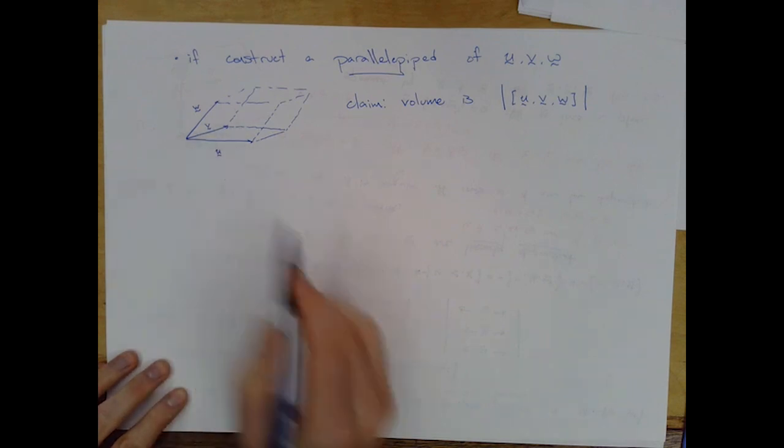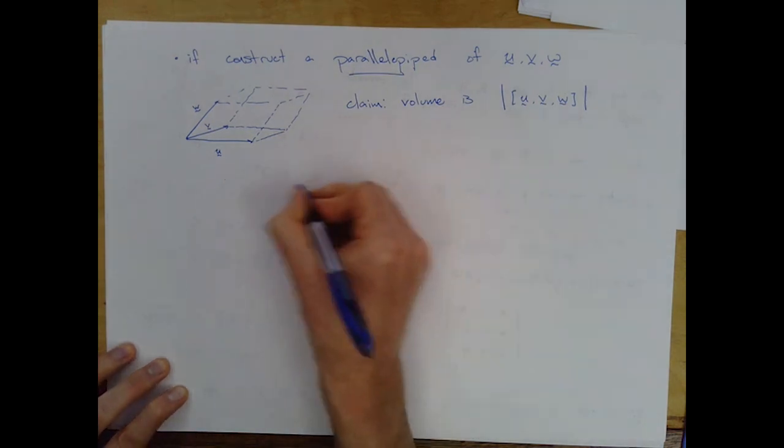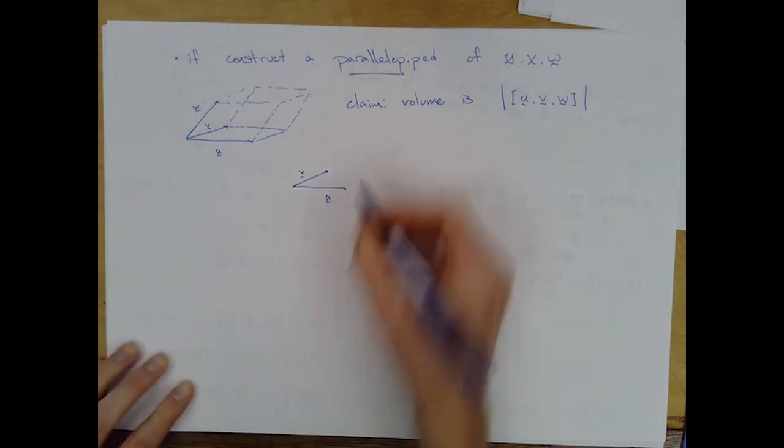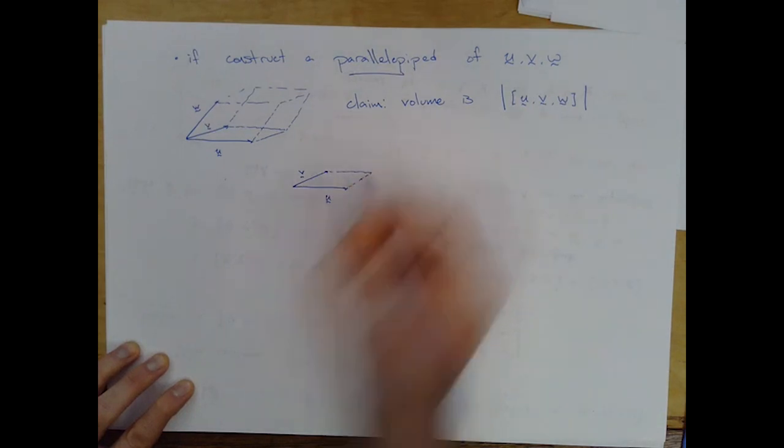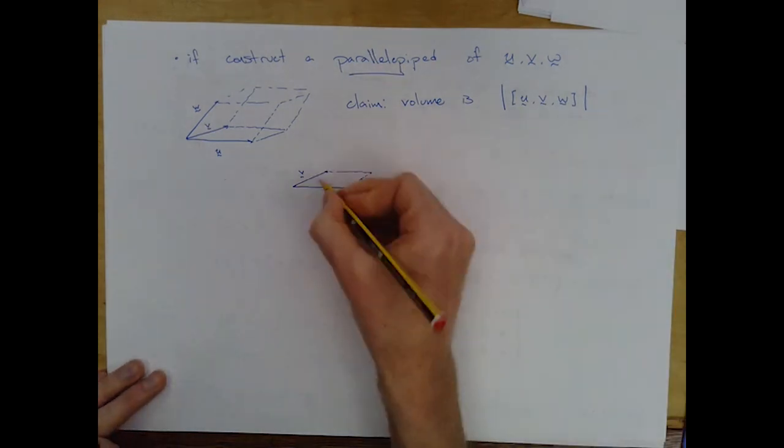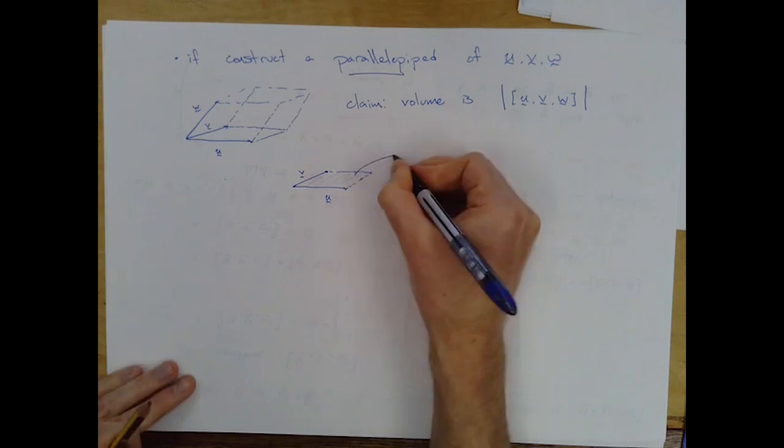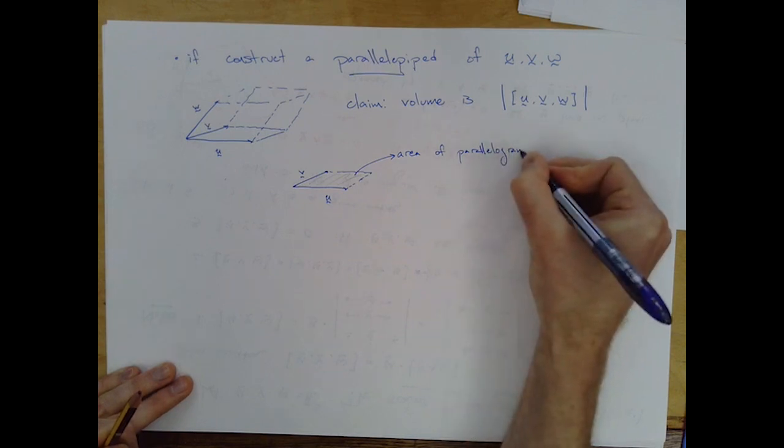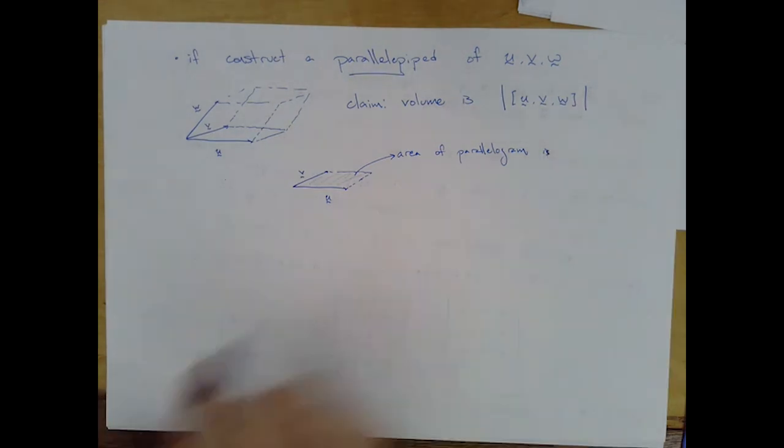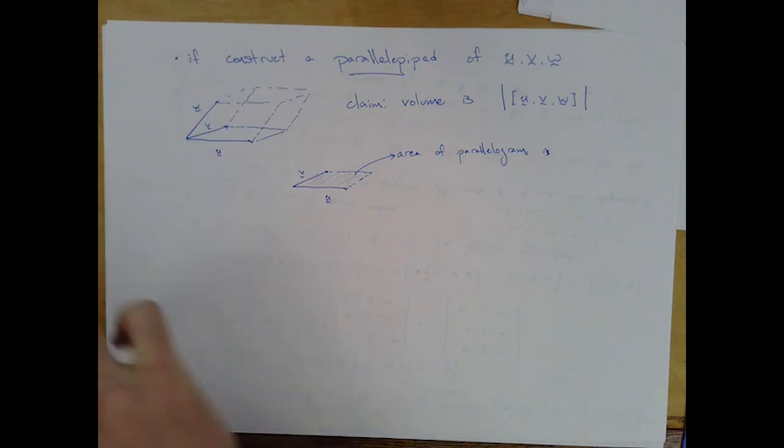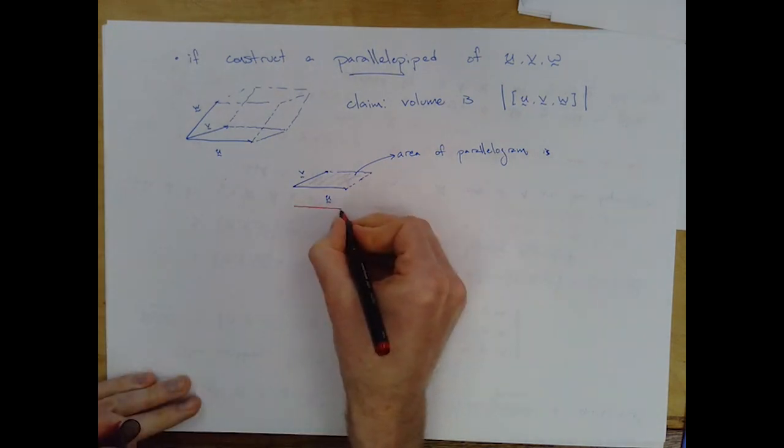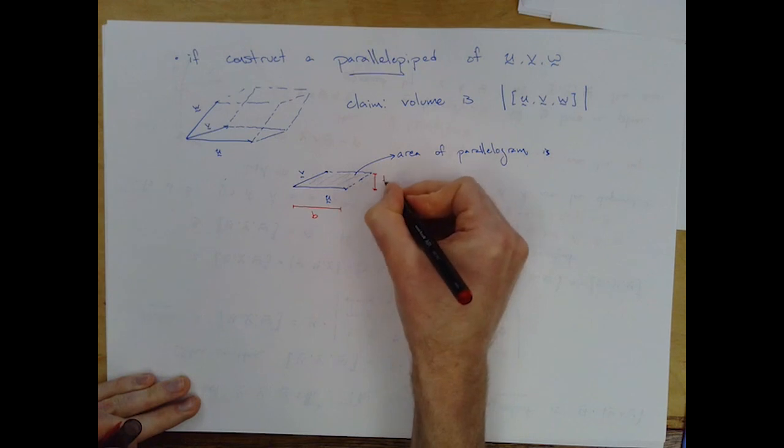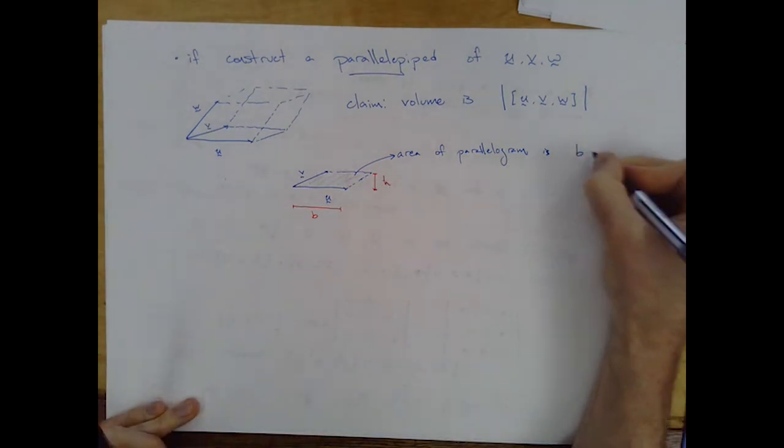So one is to think about just two vectors. Two vectors form a parallelogram. If I have u, v, I can complete the parallel sides there, and I get a parallelogram. The area of a parallelogram is base times height, that's sort of the same as for a square, where the base is, say, this length, call that b, and the height is that length, we'll call h. So it's b times h.